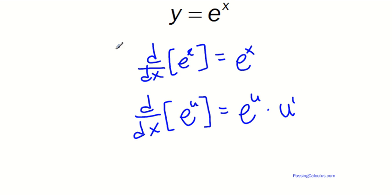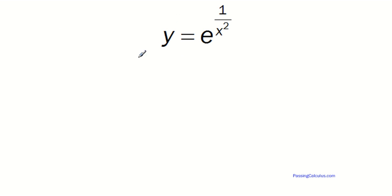So let's have a look at three examples and see how it goes. So this is the first example. So I have a u that is one over x squared.